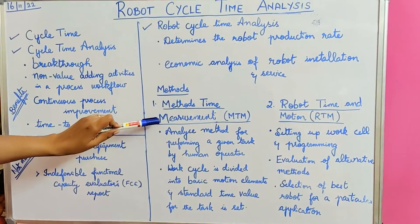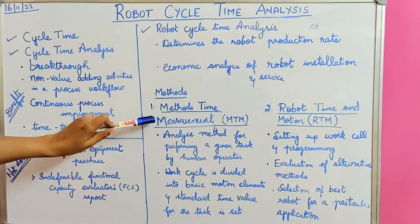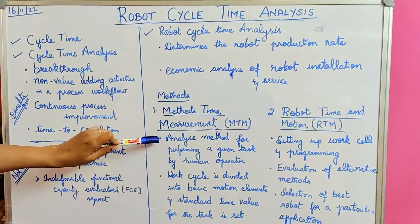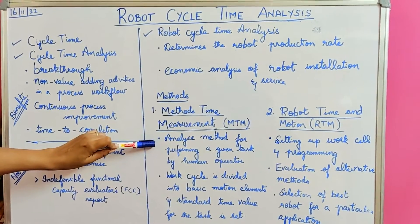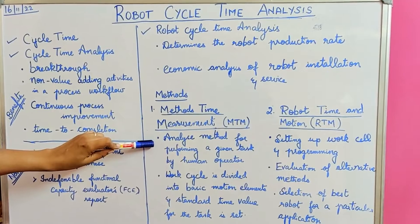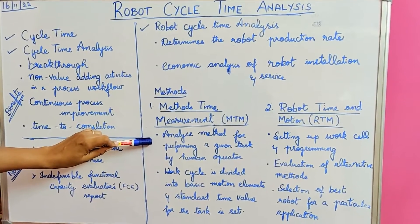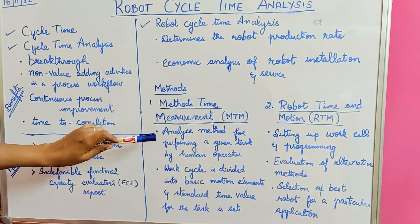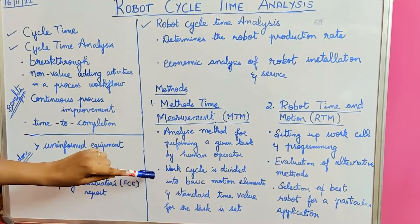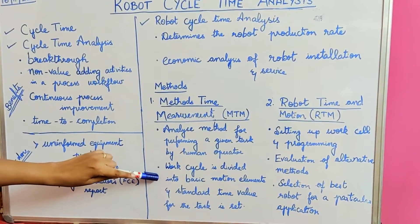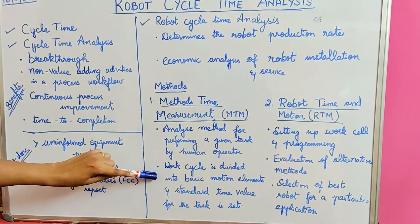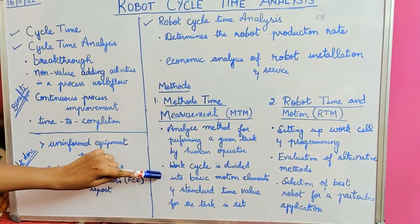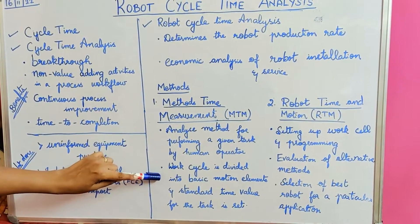The first method is MTM. It analyzes the method for performing a given task by a human operator. The work cycle is divided into basic motion elements and a standard time value for the task is set.